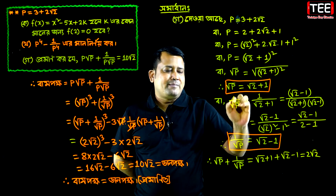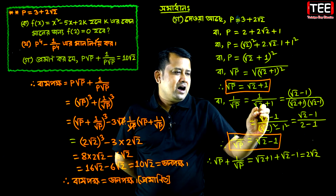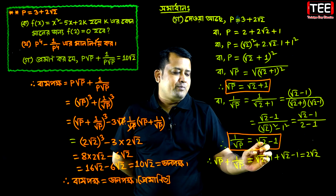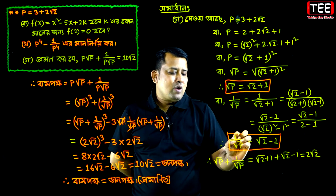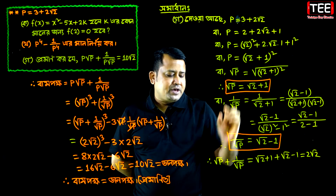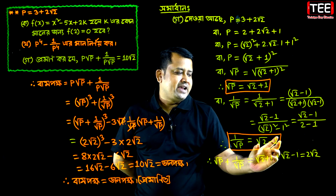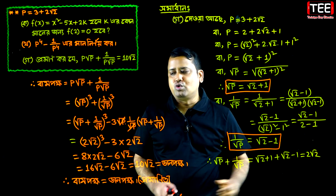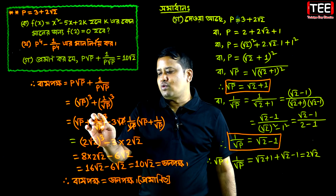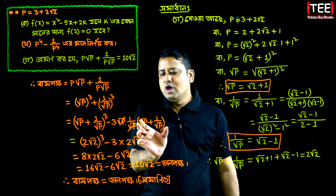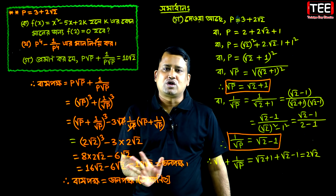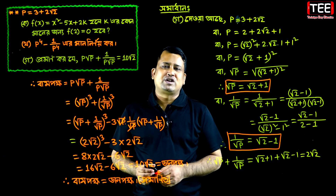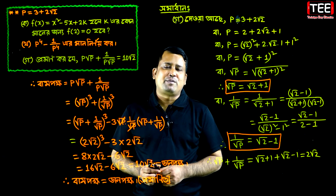1 by root p equals root 2 minus 1. Then root p plus 1 by root p equals 2 root 2. So root p plus 1 by root p equals 2 root 2. Until then, go ahead and write. Bye bye.